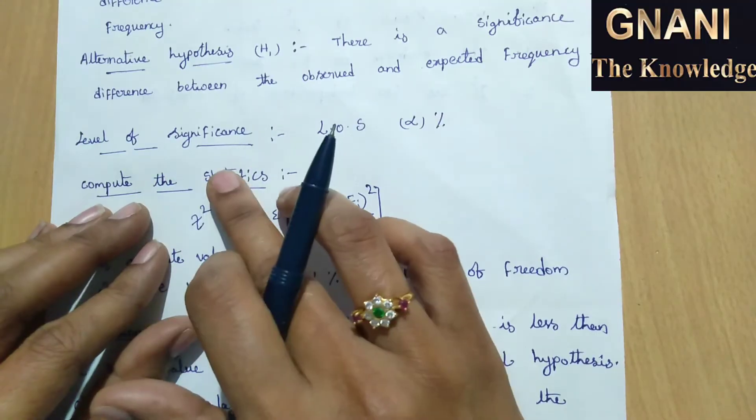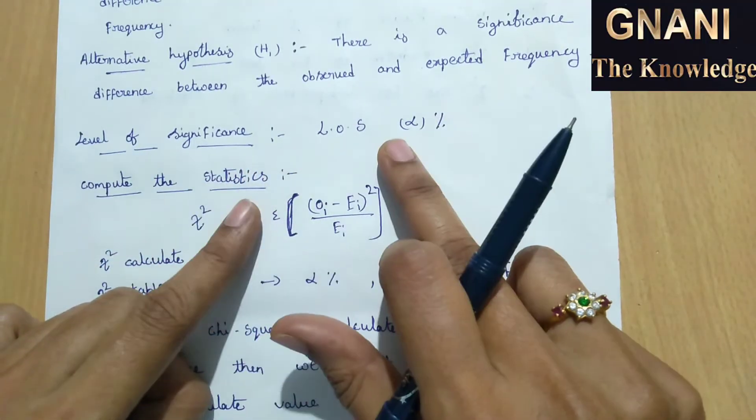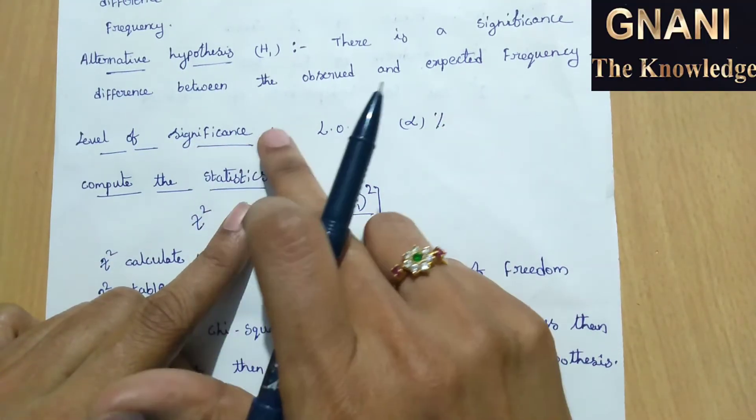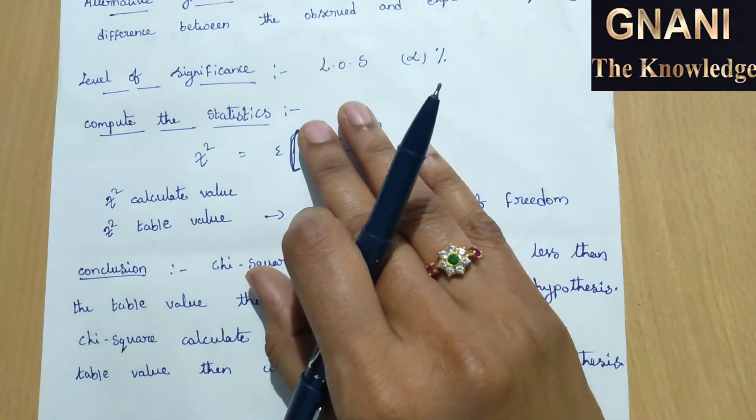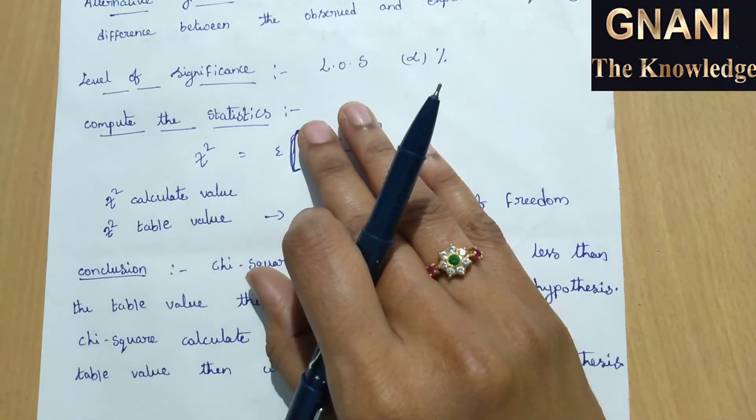And the third step is level of significance. We can write the alpha percentage in level of significance. And the fourth step is compute the statistics. We can use chi-square formula in this step.